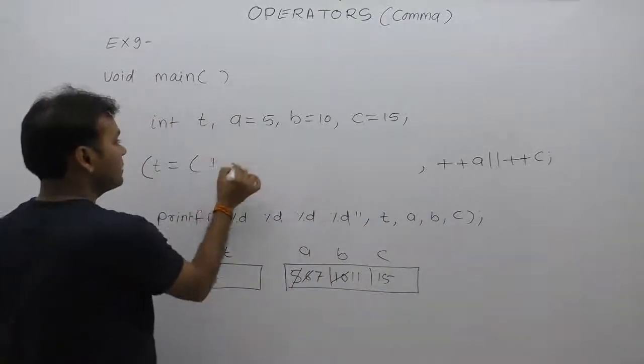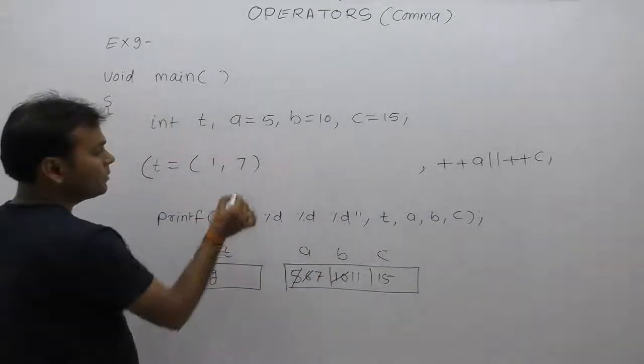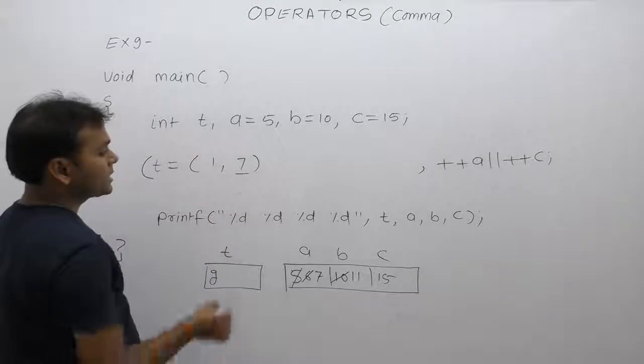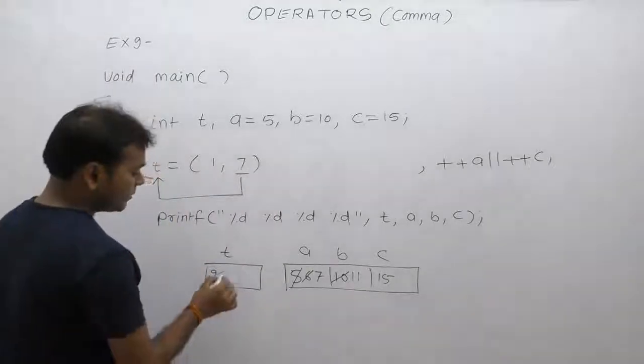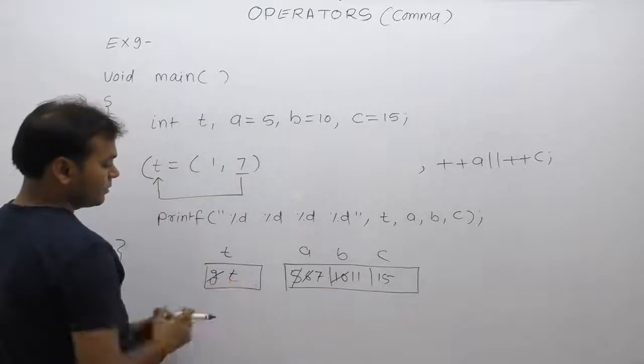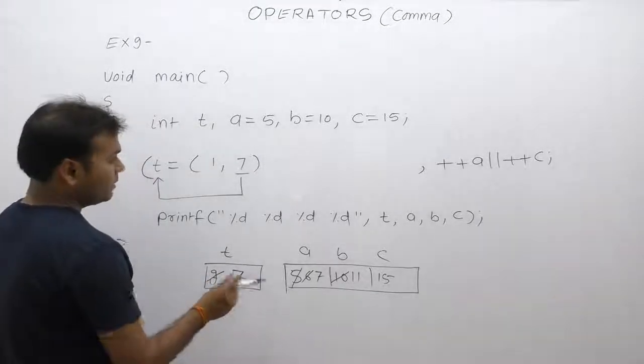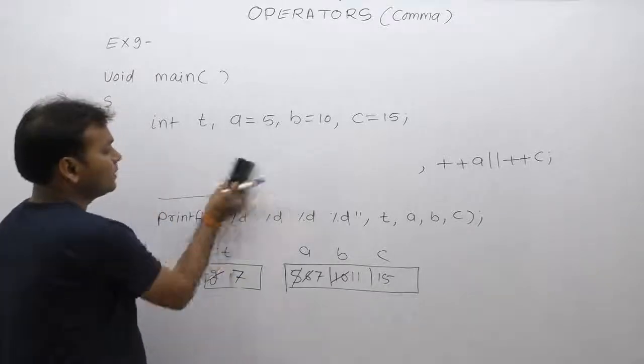Found care of 1, comma, 7. To bracket key this one, replace here, then value of last expression, which is 7. 7 is assigned to the variable T. Now T becomes 7. Sorry, T becomes 7.